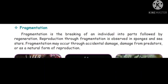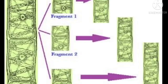Third one: fragmentation. Fragmentation is the breaking of an individual into parts, followed by regeneration. Reproduction through fragmentation is observed in sponges and sea stars. Fragmentation may occur through accidental damage, damage from predators, or as a natural form of reproduction.